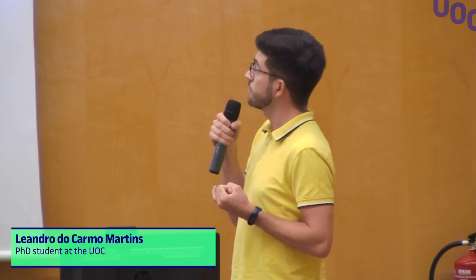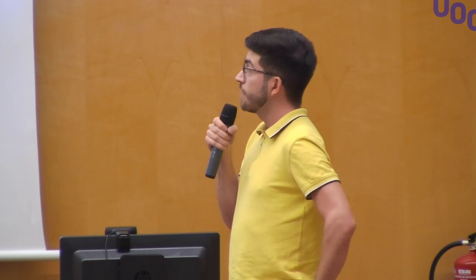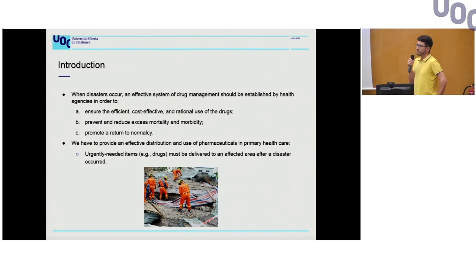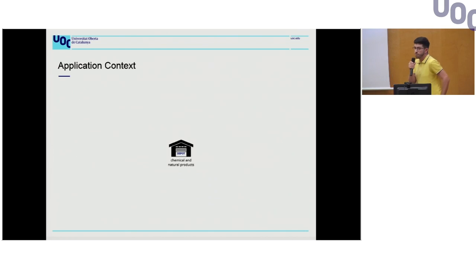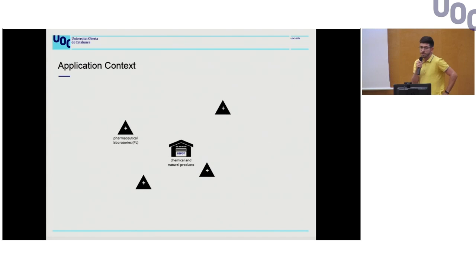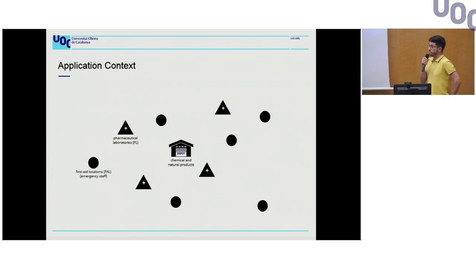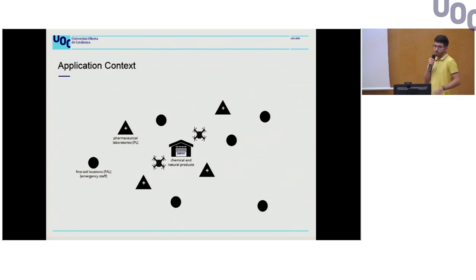When a disaster occurs, health agencies should provide an effective system of drug management to ensure the use of drugs, reduce mortalities, and promote return to normalcy. We need to provide an effective distribution system to deliver drugs and medicines in disaster areas. We have a central depot holding chemical and natural products. These raw products are delivered to intermediate pharmaceutical labs, which manufacture medicines and drugs, then delivered to first aid locations in the disaster area — using drones, since roads may not be accessible by conventional cargo vehicles.